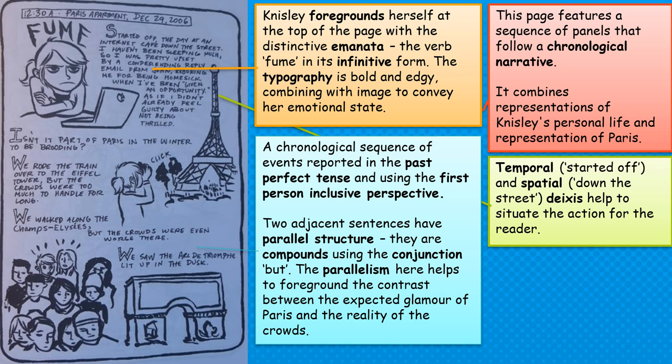We then get a chronological sequence of events in the past perfect tense, using a first-person inclusive perspective, with parallel adjacent structures. As she goes on to explore Paris, we get: 'We rode the train over the Eiffel Tower, but the crowds were too much to handle for long. We walked along the Champs-Élysées, but the crowds were even worse there.' Two parallel sentences foregrounding the contrast between the expectations of Paris and the reality of the crowds.